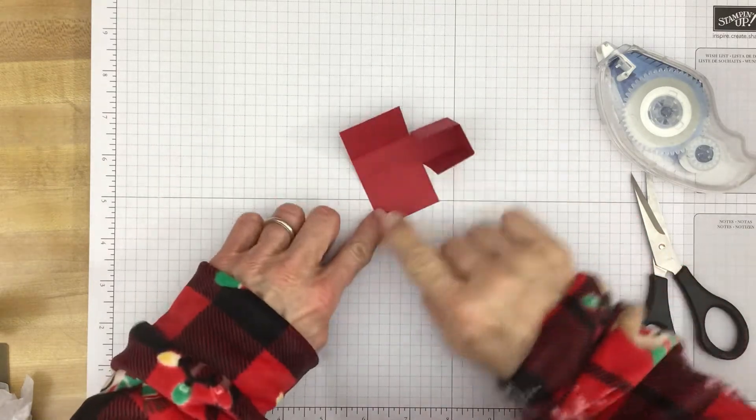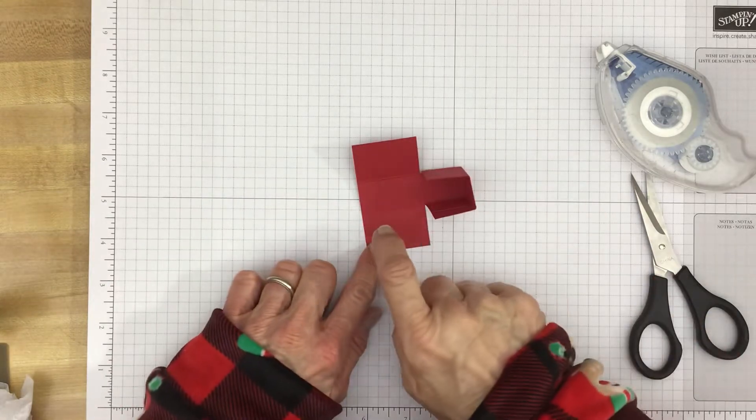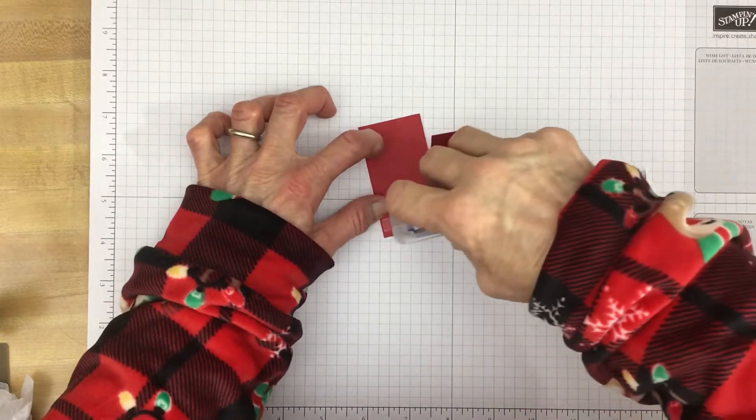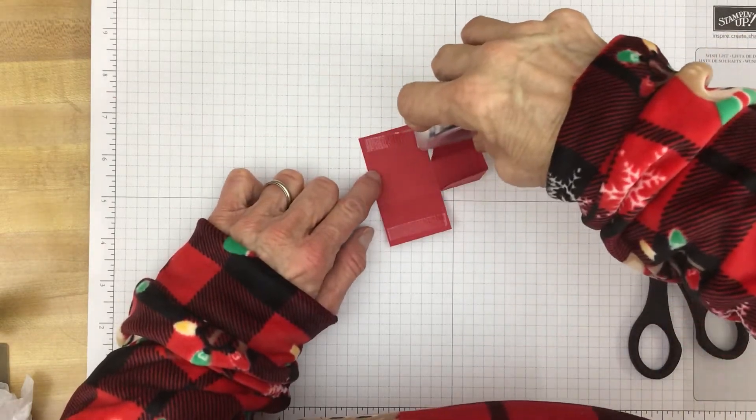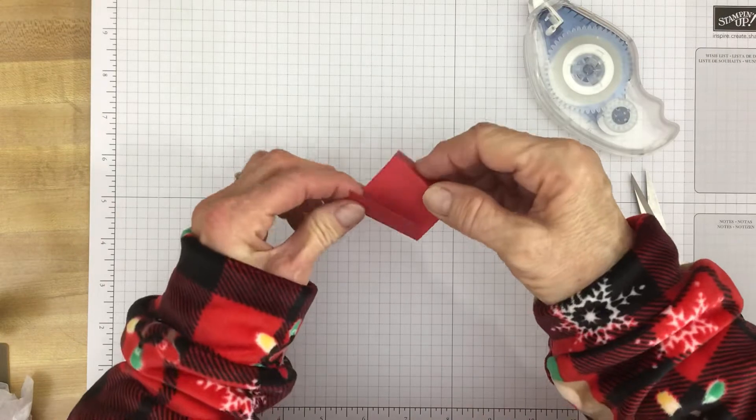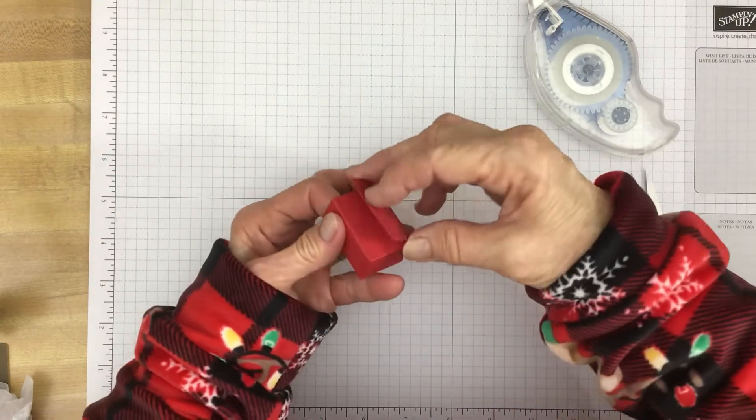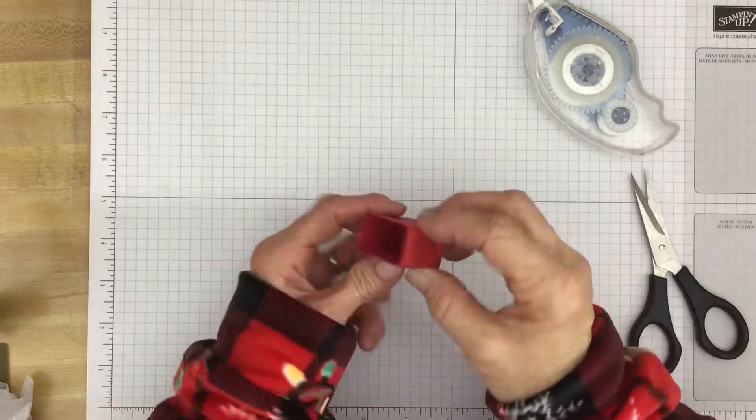There we go. And now we need to, on the inside flaps, we're going to put some adhesive here and adhesive here. Just fold this up this way, adhere it, fold this over, adhere it, and there's the little box.